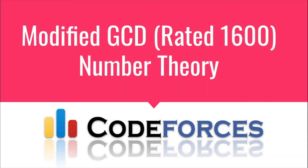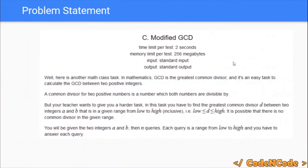Hello guys, this is Code and Code, and this is a video editorial for the problem 'Modified GCD' taken from Codeforces. This is one of the problems from number theory on Codeforces. The problem statement: you are given two integers a and b and q queries. In each query you are given low and high, and you have to find the highest number in this range that divides both a and b.